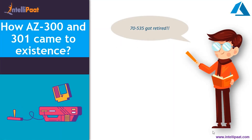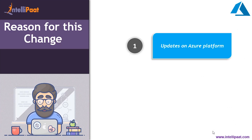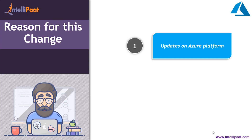Before AZ-300 and AZ-301 was introduced, 70-535 was the examination conducted to certify as an Azure architect. Let's see the reason behind this change. We all definitely have a good number of applications on our phone. Every time there's a new update for the application, you'll receive a pop-up notification asking you to update it. The same way, Azure had new features added to it every year, and every time there is an update, the examinations also have to be updated — hence, the transition.